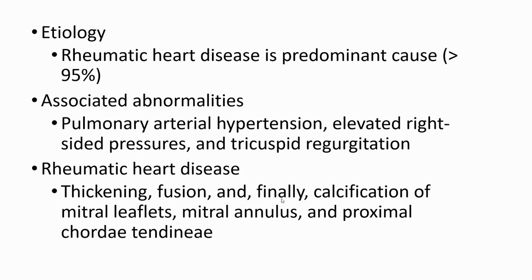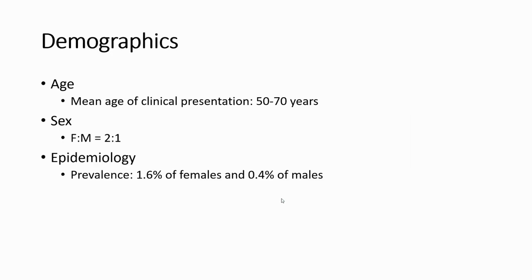Rheumatic heart disease causes thickening, chordal fusion, and calcification of the mitral valve. Rheumatic heart disease valve area is less than 1.6 cm². The other etiology of mitral valve stenosis has an age of onset between 50 to 70 years. The female to male ratio is 2 to 1, with prevalence for female around 1.6% and for male 0.4%.